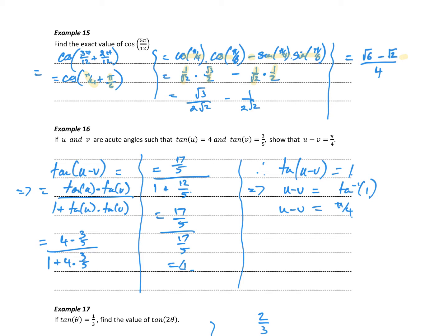So a little bit of a proof here. If u and v are acute angles such that tan of u is equal to 4 and tan of v is equal to 3 fifths, show that u minus v is equal to π on 4. So what I thought I'd do is take tan of u minus v and work that out. Using my tan expansion, tan u minus tan v over 1 plus tan u tan v. I get 4 minus 3 fifths over 1 plus 4 times 3 fifths. We work through our simplifications. I end up with 1. So I get tan of u minus v is equal to 1. So u minus v is equal to tan inverse of 1, which is π on 4, and there's the expression that we needed to show.